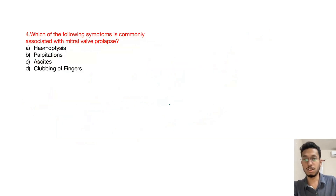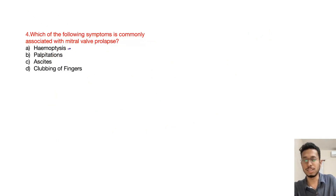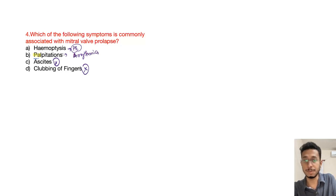The next question: which symptom is commonly associated with mitral valve prolapse? Hemoptysis relates to pulmonary embolism; ascites is very rare; clubbing of fingers is usually not seen. Palpitations are due to arrhythmia, along with lightheadedness and syncope. Therefore, palpitations are the primary symptom with which the patient will come to you.